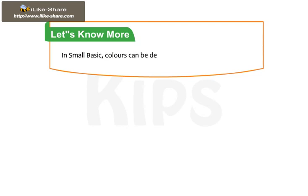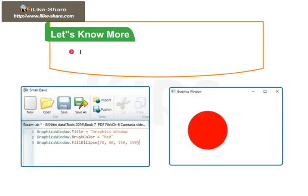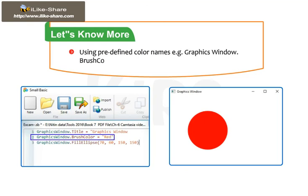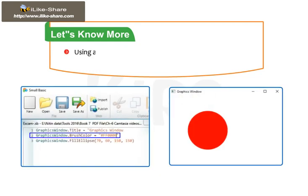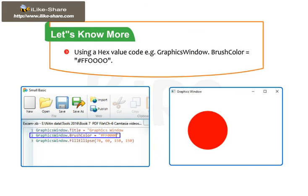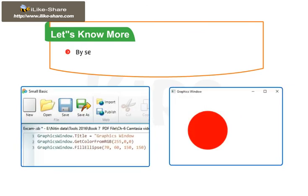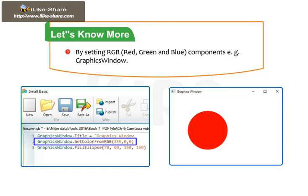In Small Basic, colors can be defined in three different ways. First, using predefined color names — for example: GraphicsWindow.BrushColor = Red. Second, using a hex value code — for example: GraphicsWindow.BrushColor = "#FF0000". Third, by setting RGB (red, green and blue) components — for example: GraphicsWindow.GetColorFromRGB(255, 0, 0).